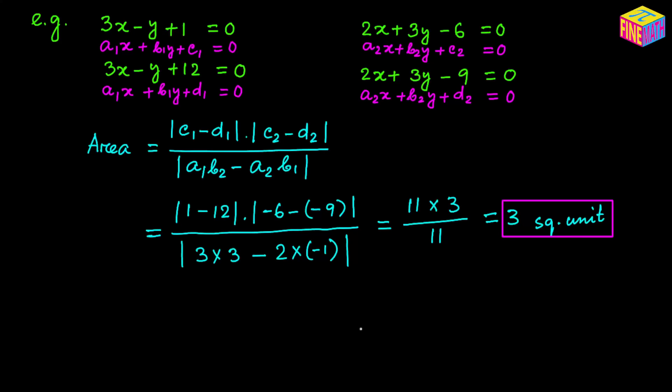If we can remember the formula for the area of a parallelogram, calculating the area is pretty easy. We just have to be able to identify A₁, B₁, C₁, D₁ and A₂, B₂, C₂, D₂ from the given equations. Once we recognize those coefficients and constant terms, calculating the area is straightforward. I hope everything made sense. Thank you for watching. See you in the next video.